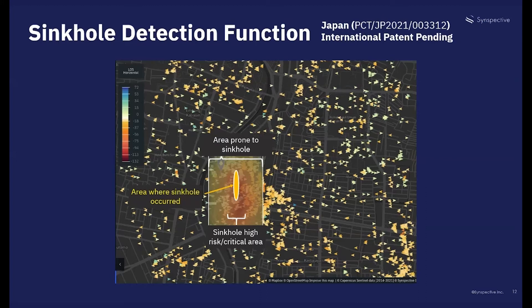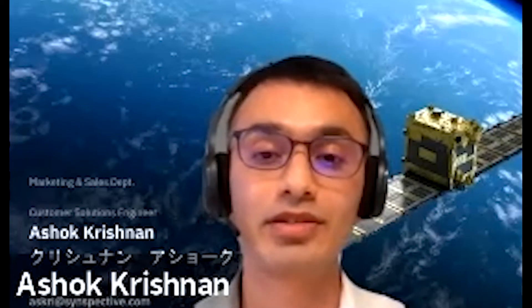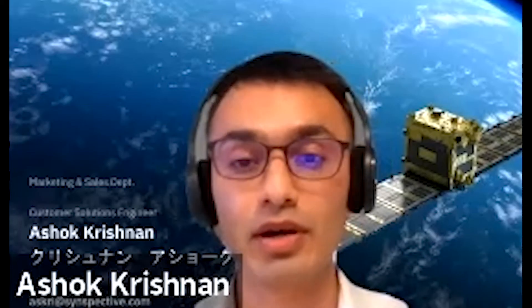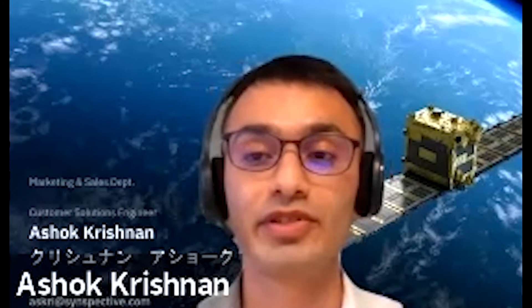We also have another solution called the geospatial index in the beta phase, which should be released in the next couple of months. We are looking at beefing up our portfolio of object detection solutions for facility monitoring, and this should be out in the later part of this year.